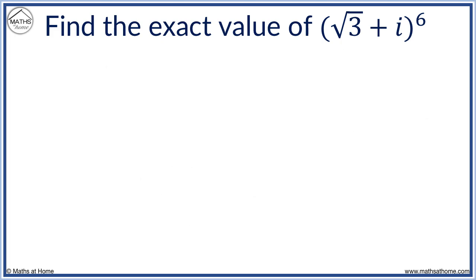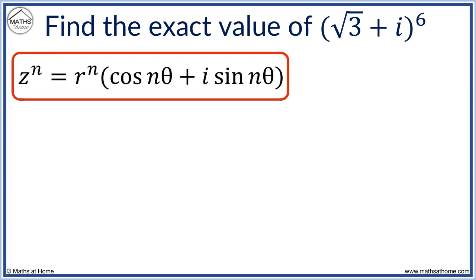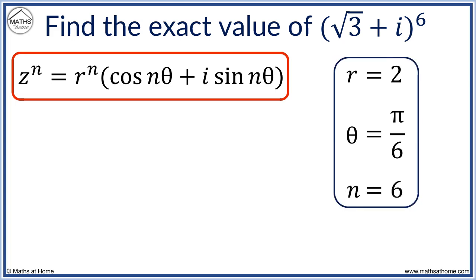We now use de Moivre's Theorem with r equals 2, theta equals pi over 6, and n equals 6, since we are raising the complex number to the power of 6.